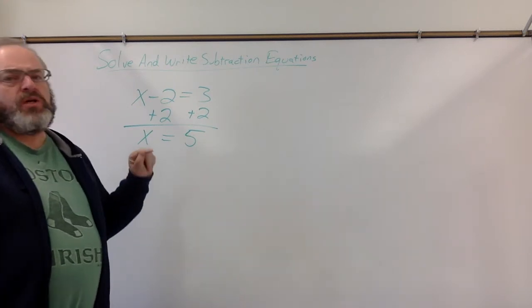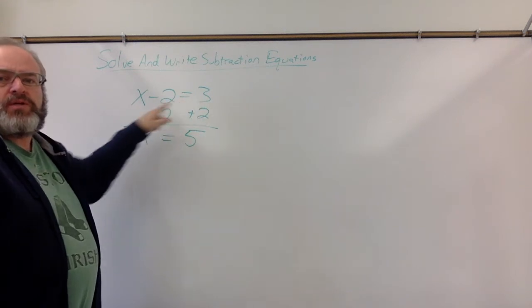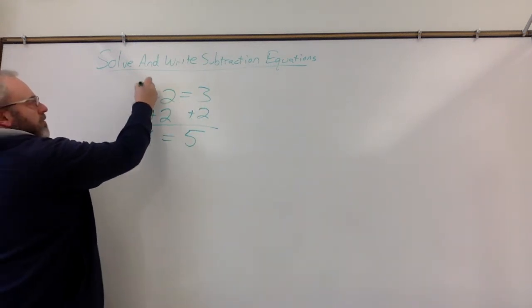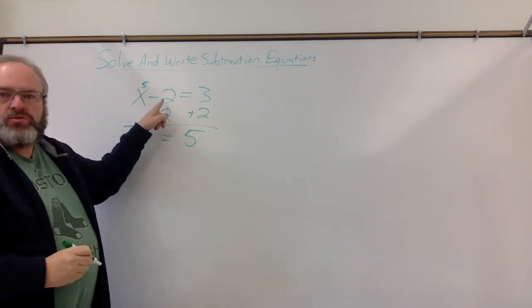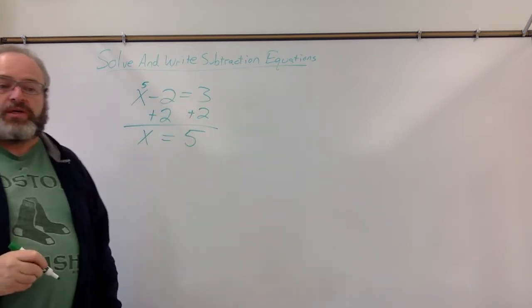Now, if we get the answer and we're not quite sure, put this 5 back in for x and make sure that our left side equals our right side. Here, we have 5 minus 2. Is 5 minus 2, 3? If it is, we know we've got the right answer.